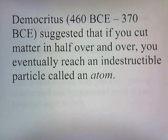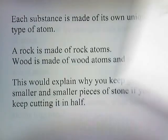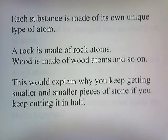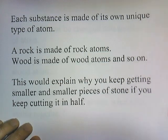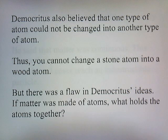Democritus, another Greek, suggested that if you cut matter in half over and over, you eventually reach an indestructible particle called an atom. Each substance is made of its own unique type of atom — a rock is made of rock atoms, wood is made of wood atoms, and so on. This explains why you keep getting smaller and smaller pieces of stone if you keep cutting it in half. Democritus also believed that one type of atom could not be changed into another type of atom, so you can't change a stone atom into a wood atom.